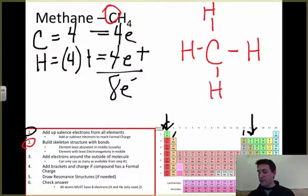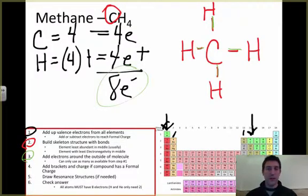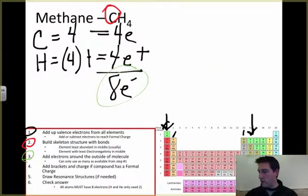So we've drawn in our hydrogens, and let's see how many electrons, for number three here, we can add around the outside edge. So I've used two, four, six, eight to make my bonds, and I can only use eight electrons total. Now, let me go back a little bit and show you how this all works out.